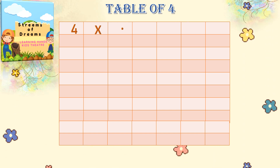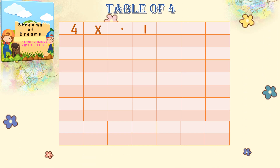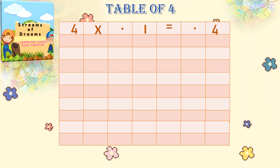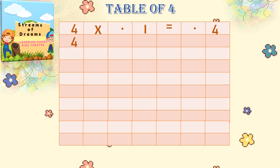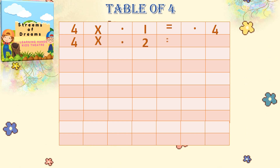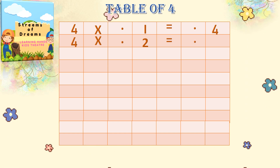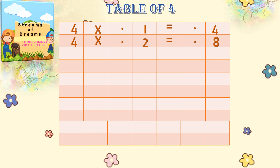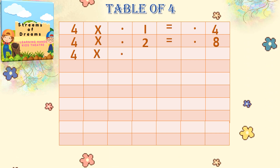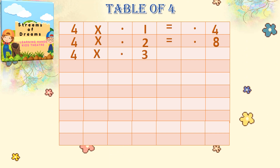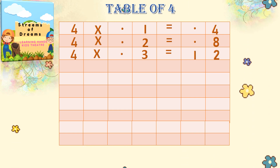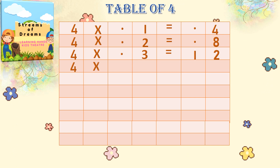4 into 1 equals 4. 4 into 2 equals — we are going to add 4 plus 4 — 8. 4 into 3 equals — we will not do 4 plus 4, it is 8 plus 4 — it is 12.